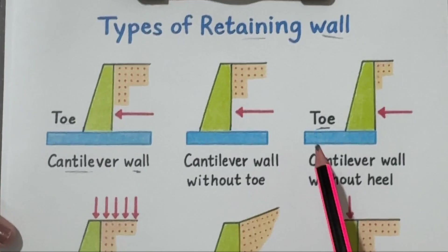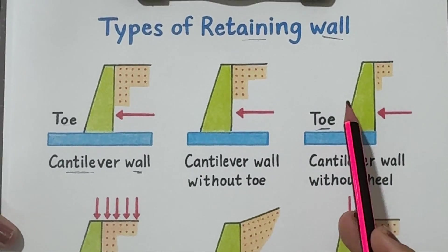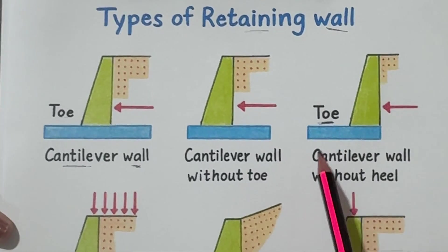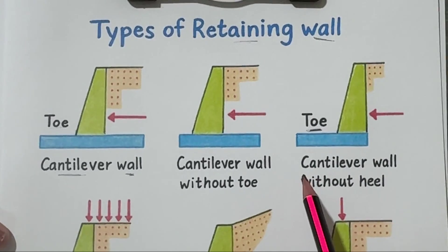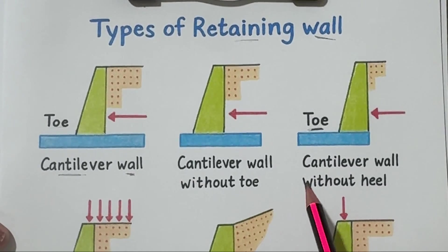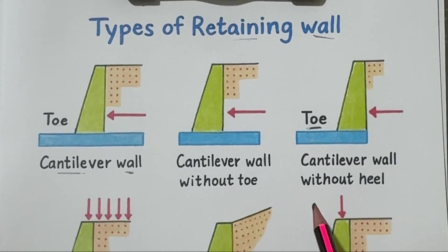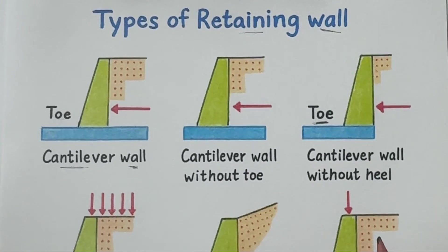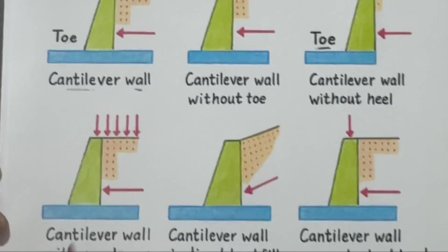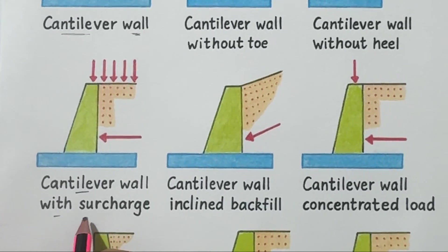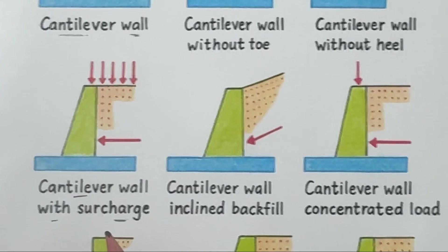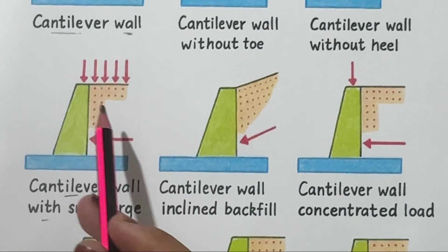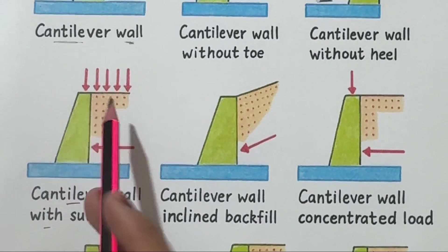Number three: cantilever wall without heel. This is the opposite — the heel is removed and only the front toe slab remains. It's useful when we can't dig behind the wall, maybe because of an existing structure or property line. The stability here comes mainly from the wall's own weight and the pressure on the toe.